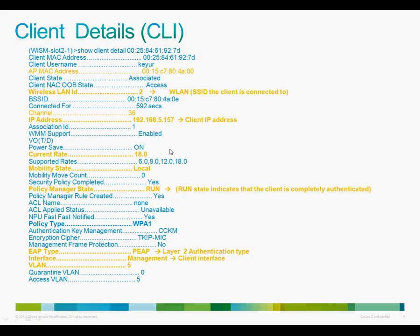Besides the debug command, the show client detail command used in tandem can be very helpful in identifying client connectivity issues. The policy manager state provided here on the CLI gives a quick snapshot of the current state of the client. Our end goal should always be to get the client in the run state. Besides the policy manager state, there are additional information that can be gleaned from the CLI command, like the AP's name, the SSID on which the client is connected to, the channel on which the access point is operating on, and also the authentication type for the specific client.